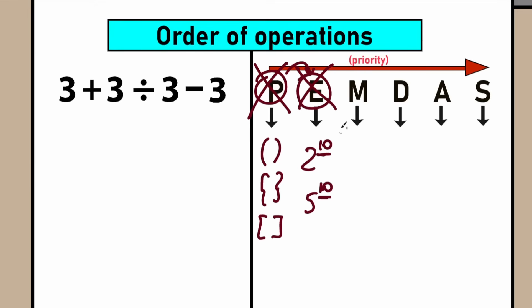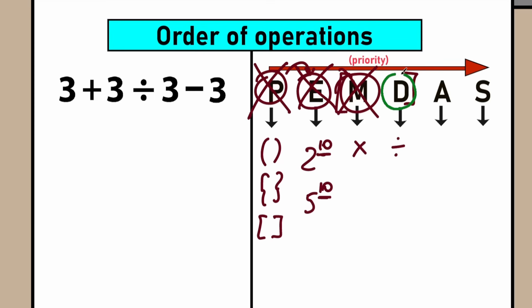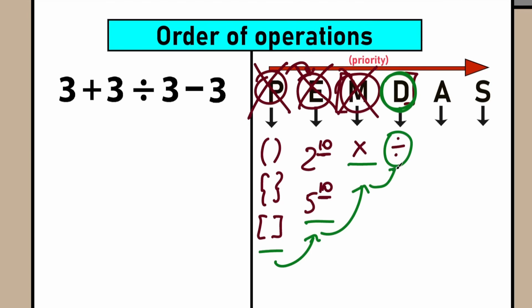We don't have parentheses. We don't have exponents. Let's go to the next step. The next step is the multiplication and division group — I'll say it at once because this is one group. M stands for multiplication, D stands for division. Let's scan where do we have multiplication or division signs. I don't see any multiplication sign, so we can skip that part. What about division? If you look closely, we have division right here. So the first step, after going through this checklist from left to right, is D which stands for division.